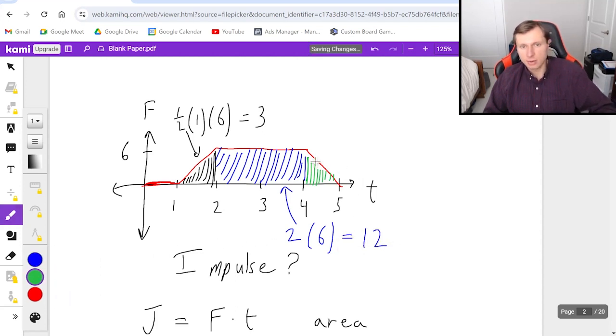And then finally the area of the green. It's going to be one half base times height. One half, base is one, and the height is six. And that gives us three again.